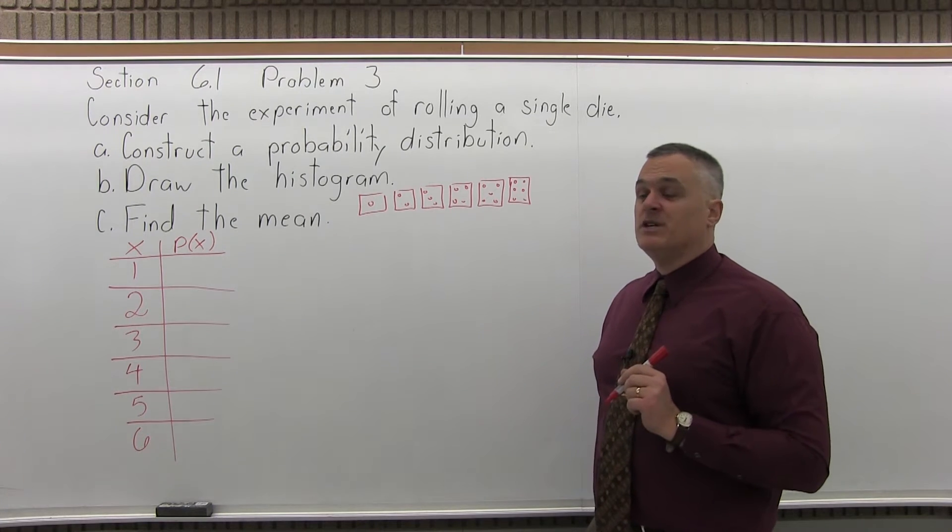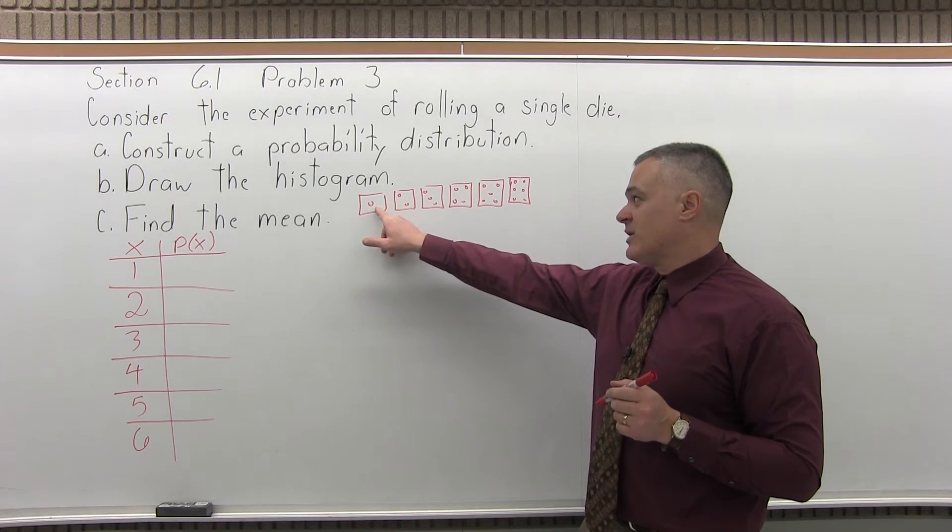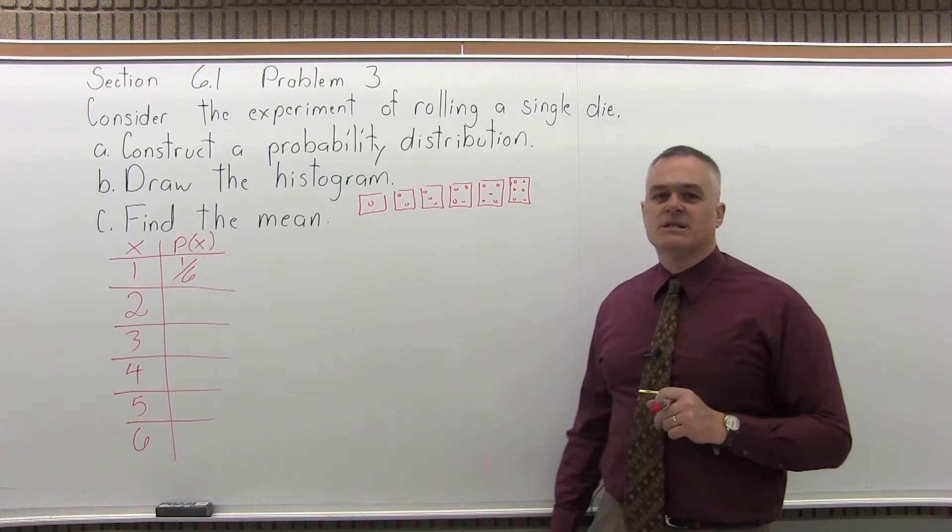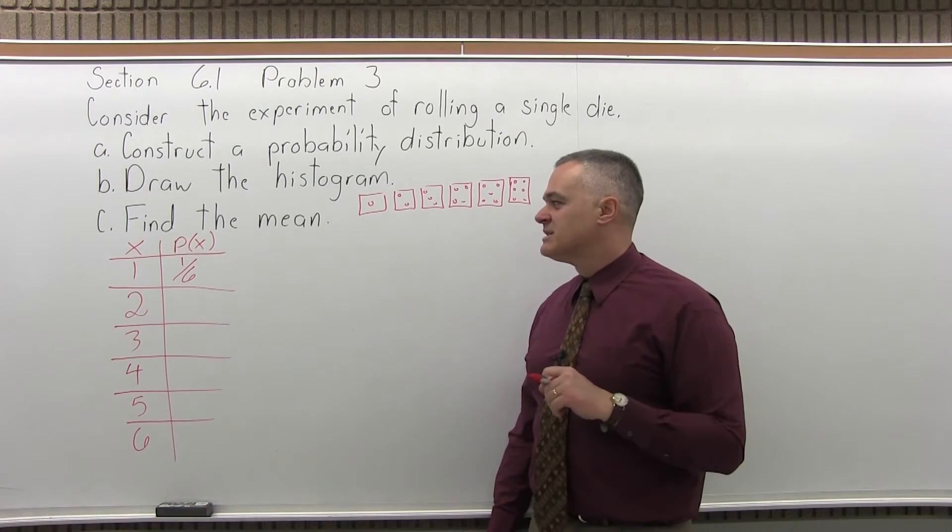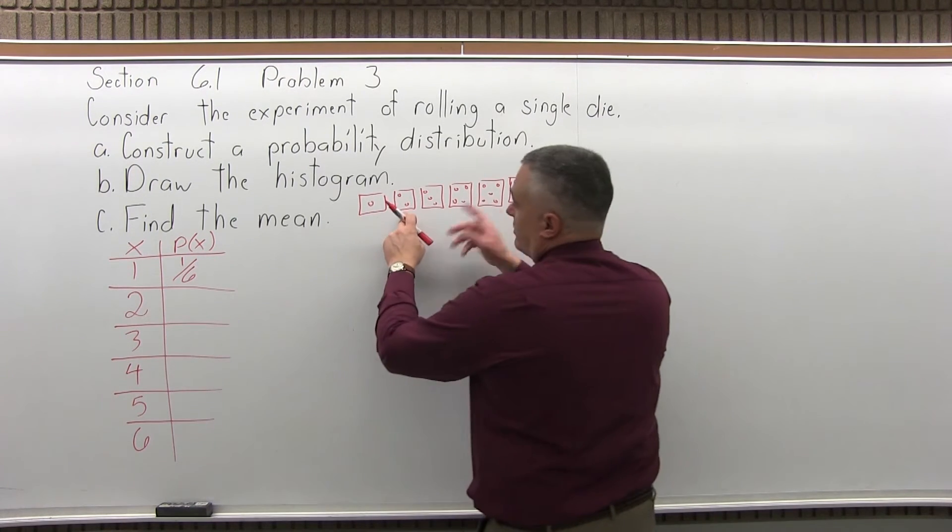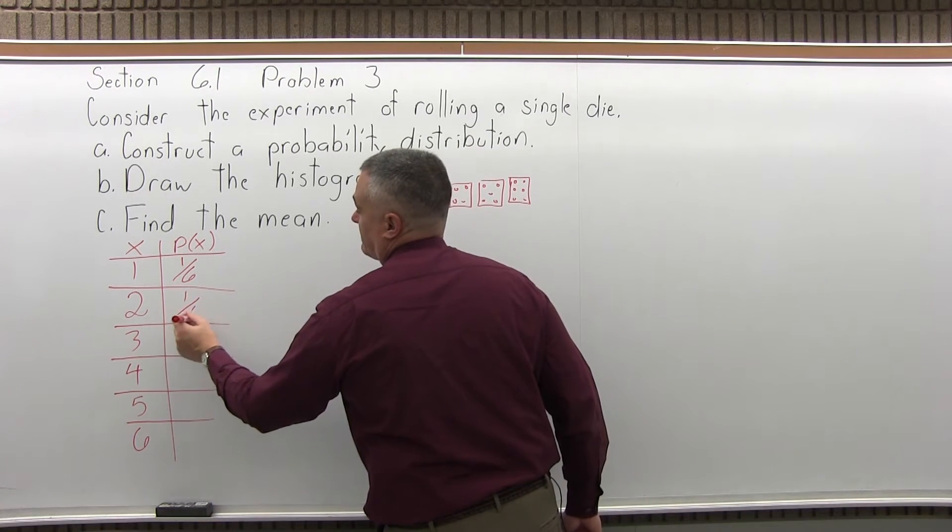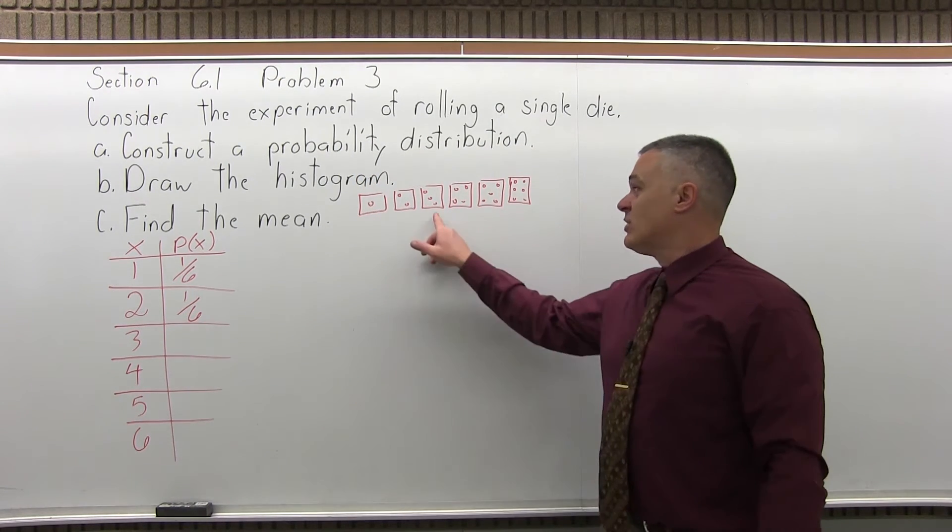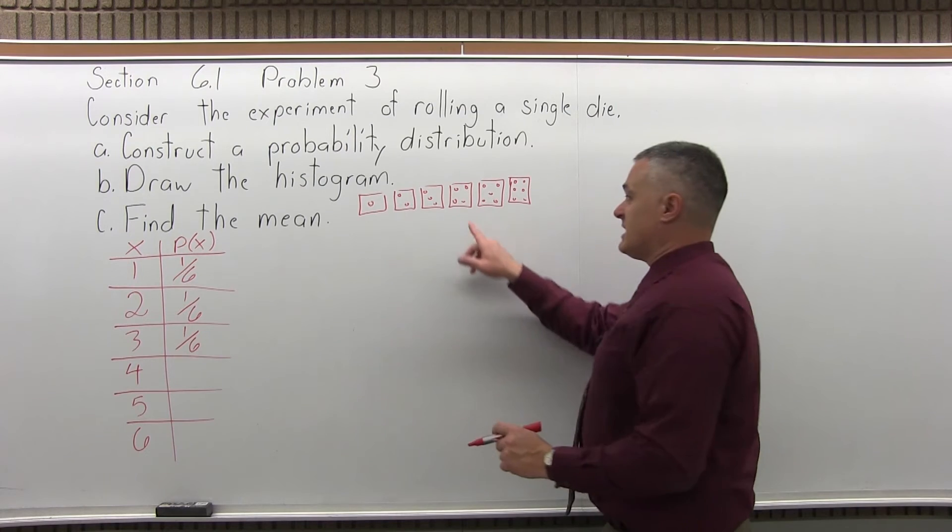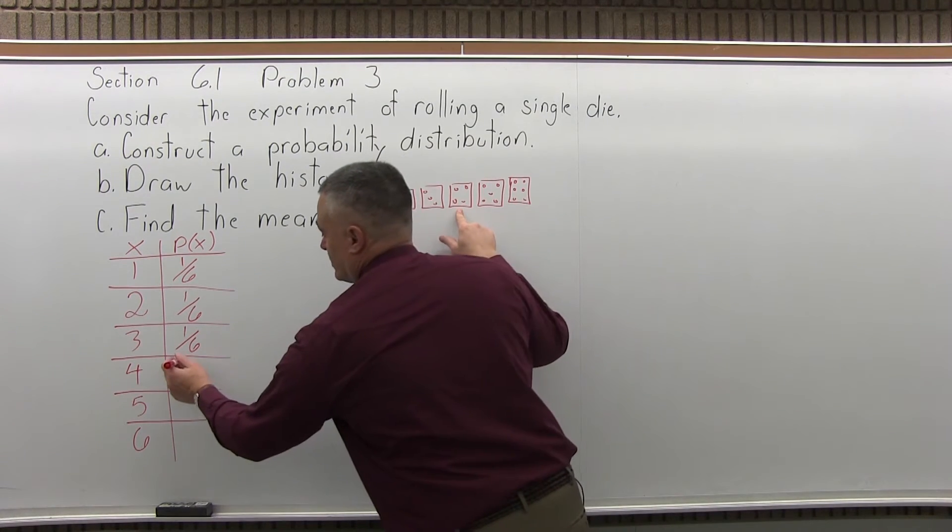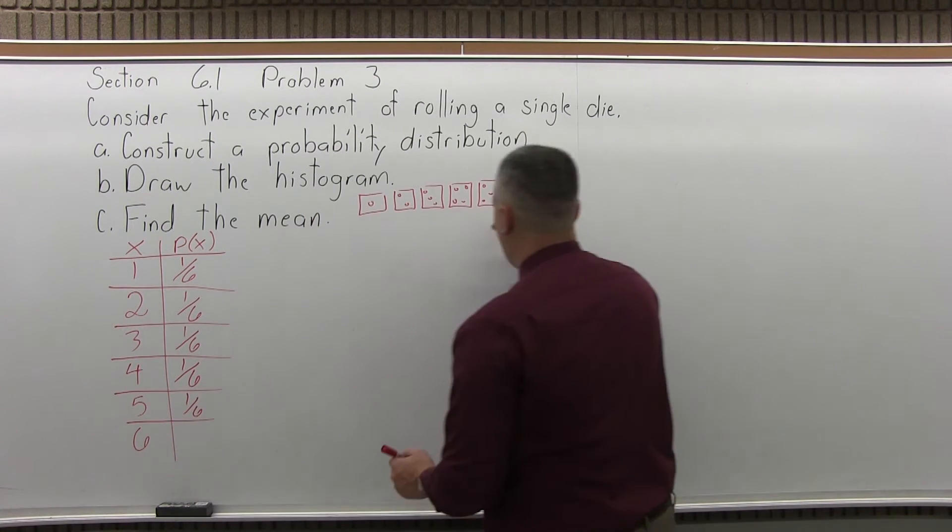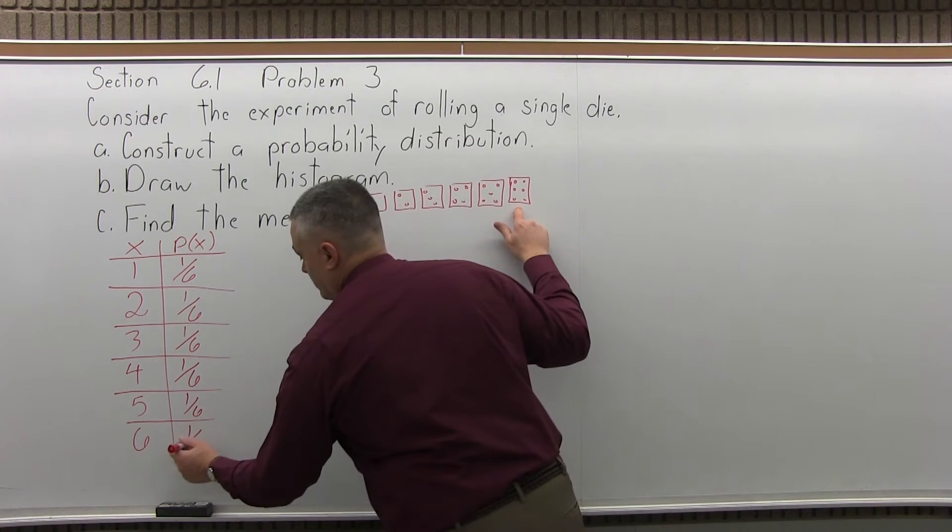Now for the probability of each one, well what's the probability of getting a 1? There's one way to get a 1 out of 6 rolls you can get all together, so it's 1 over 6. As a decimal, you could divide 1 divided by 6 and it's 0.1666, the 6's never repeat, or you can leave 1 over 6. The same thing for 2, 3, 4, 5, and 6. Each has one roll that gives that outcome out of 6 rolls all together, so each probability is 1 over 6.